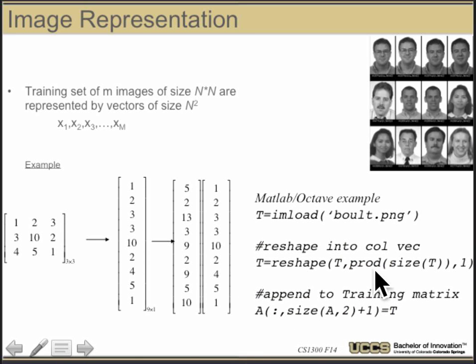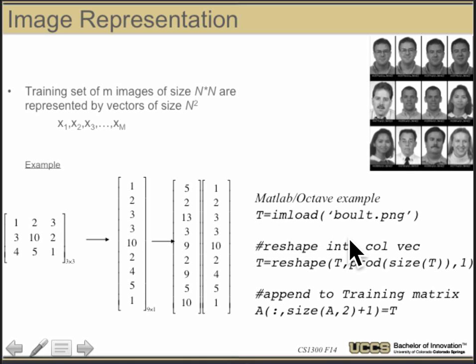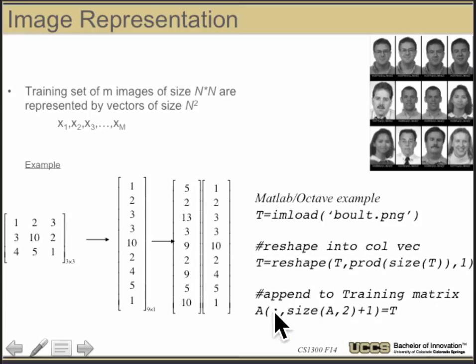To see how we might do that in MATLAB, I can use the imload function to load an image — here I'm loading a PNG, but I can also load GIF or JPEG or other types. That loads it into a 2D array. I can reshape that array using the reshape command to turn it into a column vector, and if I want to build a training matrix, I can append that to the right side. That gives a straightforward way in MATLAB to load images and append them into a matrix.